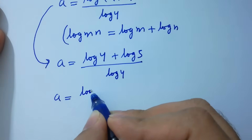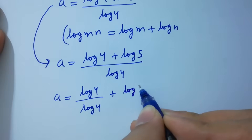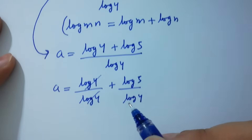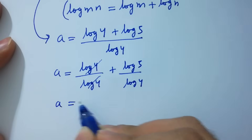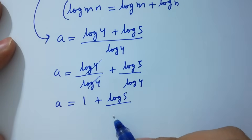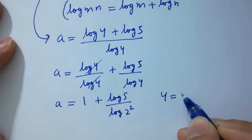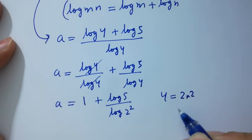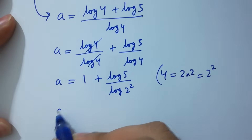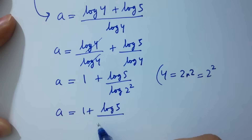Log 4 and log 4 cancel, giving a equals 1 plus log 5 over log 2 squared, since 4 equals 2 times 2, which is 2 squared. So a equals 1 plus log 5 over 2 log 2.